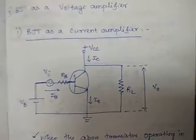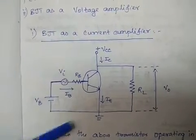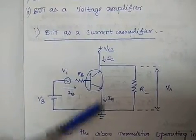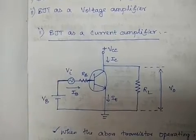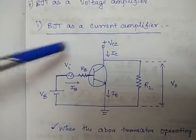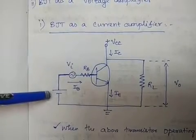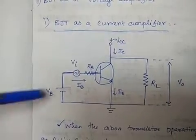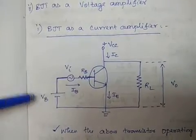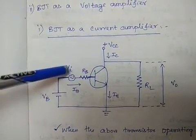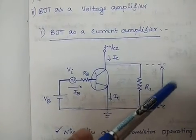First, BJT as a current amplifier. The circuit diagram we have taken is a common emitter configured circuit. In this figure, there are two DC voltages — Vcc and Vb — and one AC supply input. The output is also an AC signal.